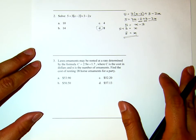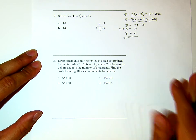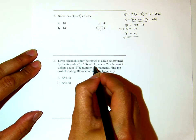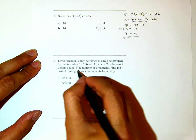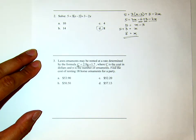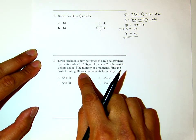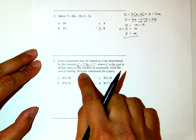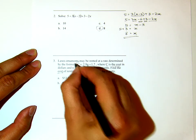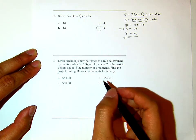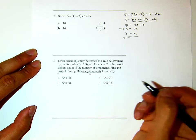Number 3. Lawn ornament may be rented at a rate determined by the formula given here, where c is the cost in dollars, this c here, and n is the number of ornaments rented. Now, find the cost of renting 18 horse ornaments for a party. So what is the one in question here? The one in question is the cost, which is the c. And renting 18 horse ornaments, which means this is the n.